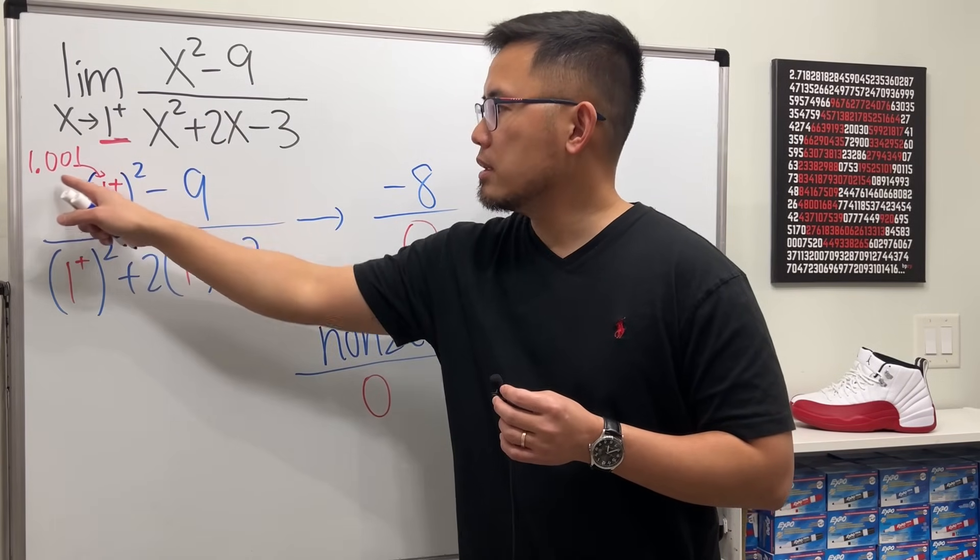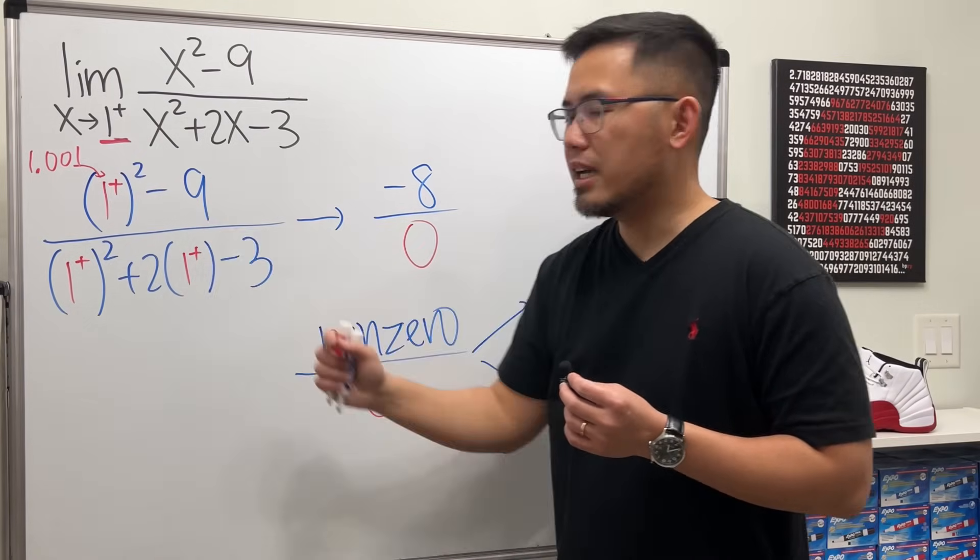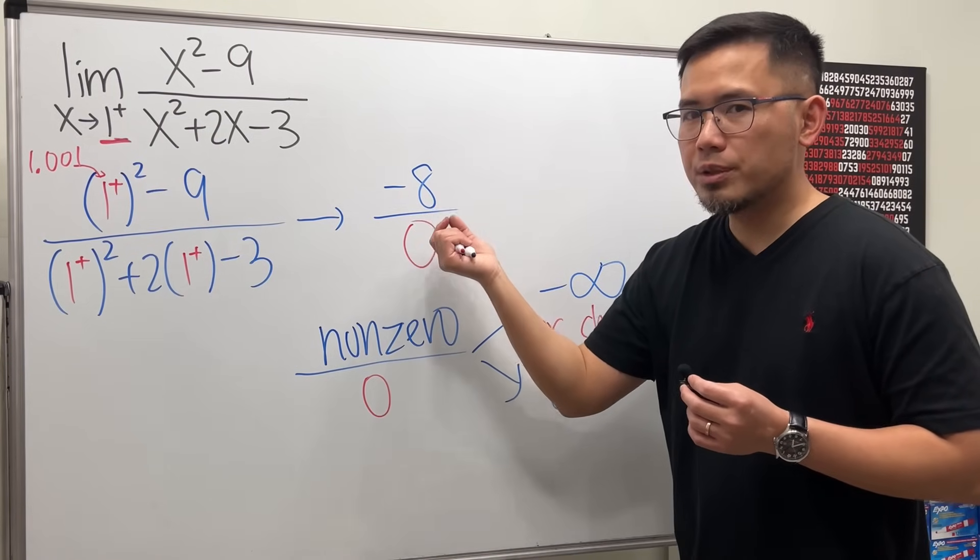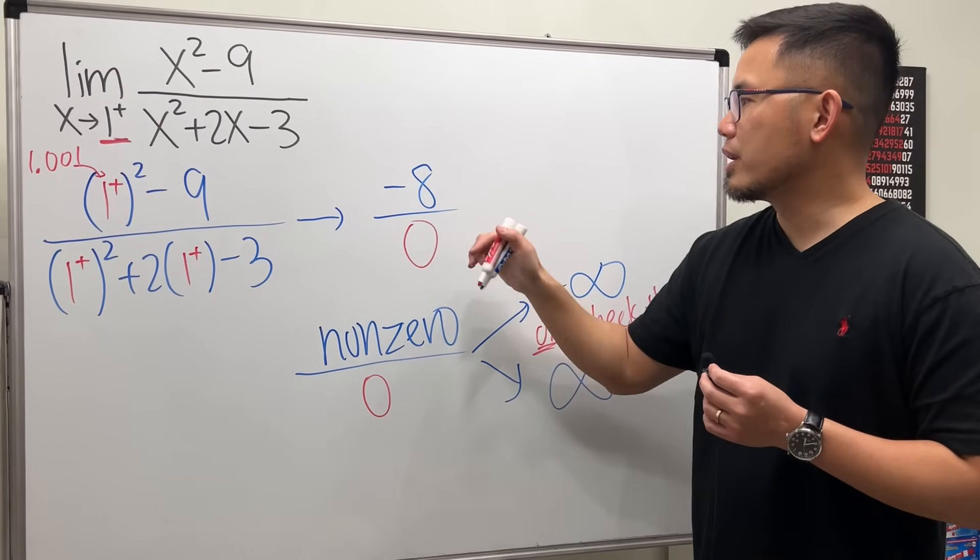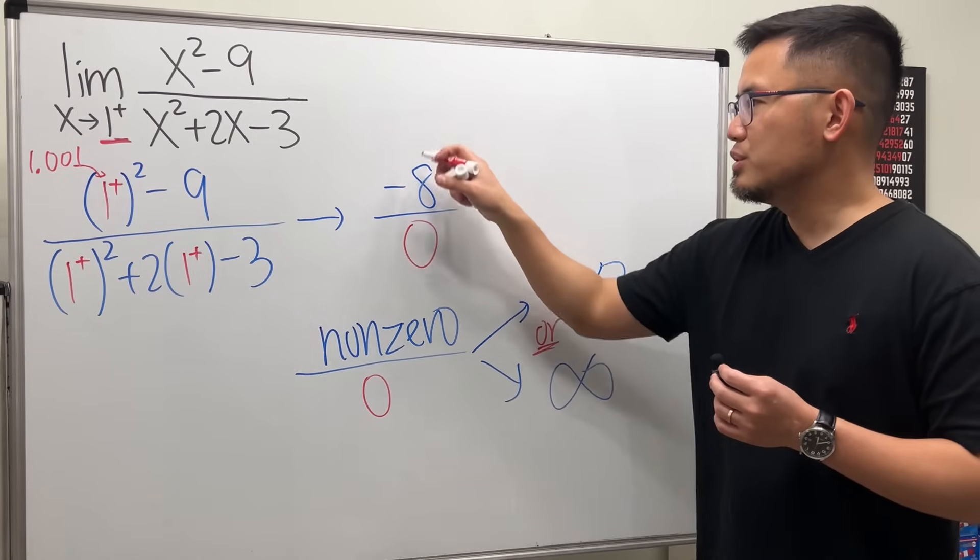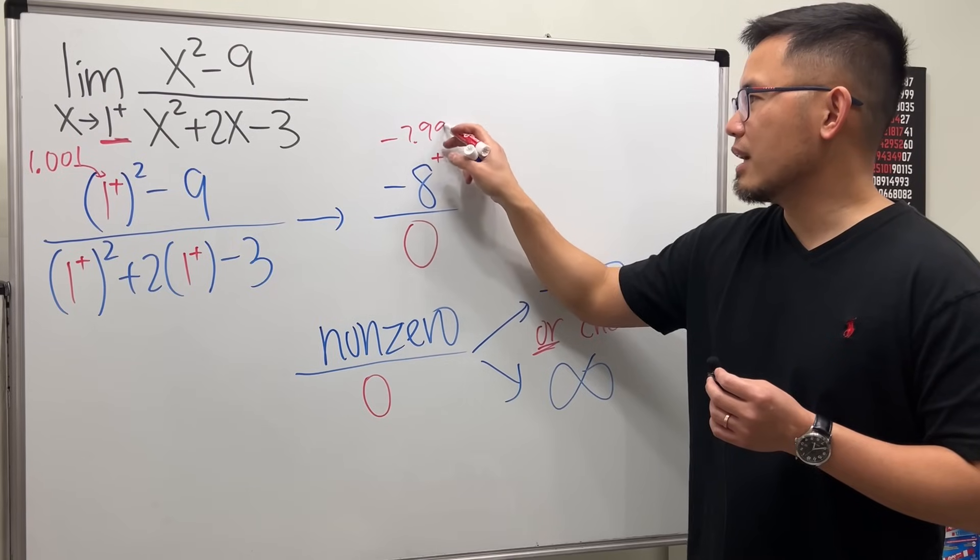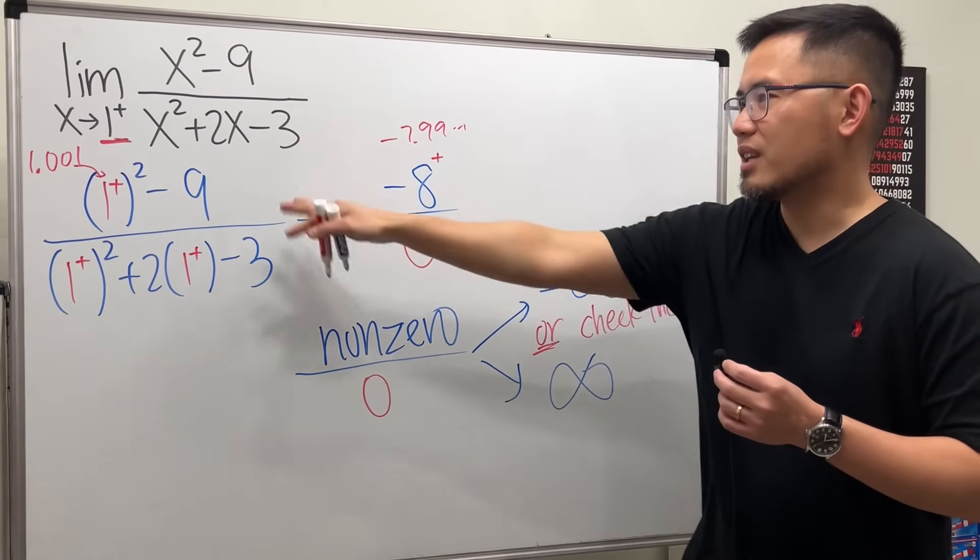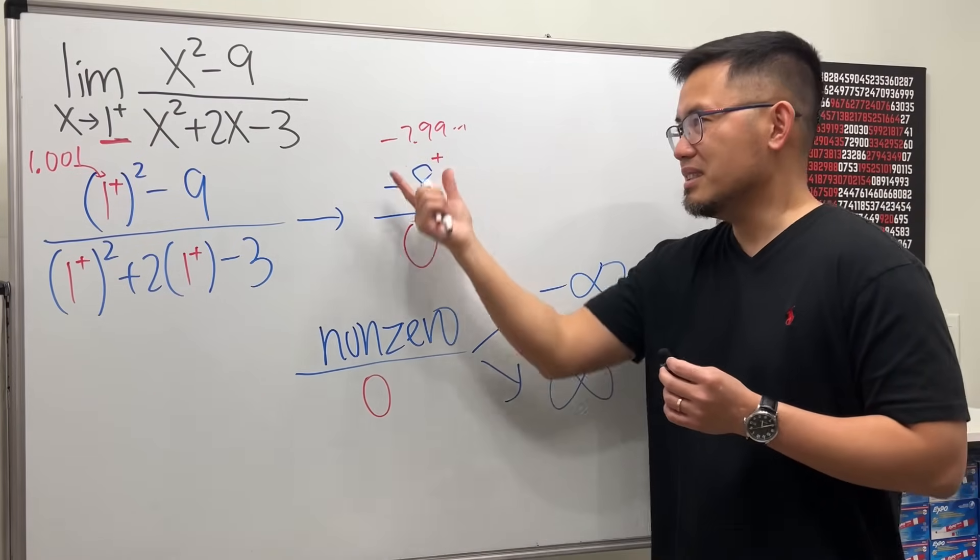1.001 squared, it's still a little bit bigger than 1 minus 9. This right here will actually be a little bit bigger than negative 8, so technically this right here should be negative 8 plus. Just think about this as like negative 7.99 something something. I didn't compute everything, but that's not the point. This is still negative, that's the key.